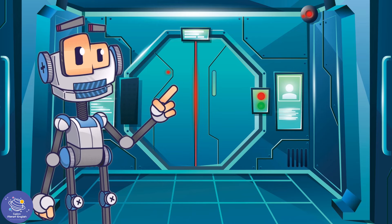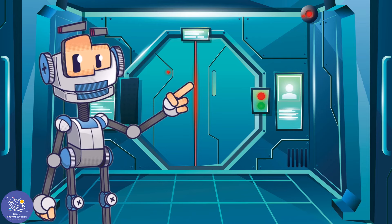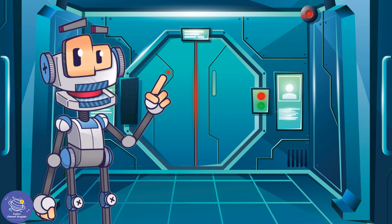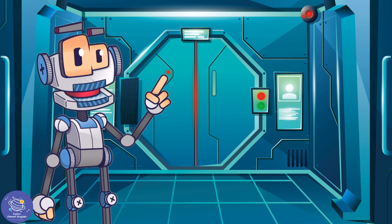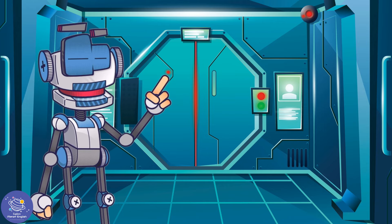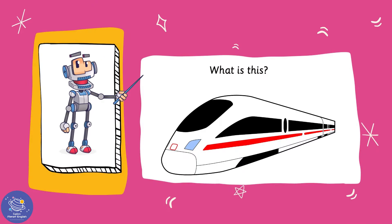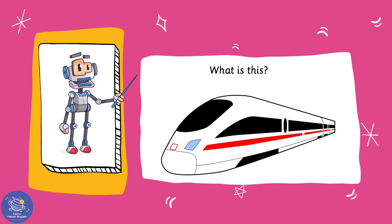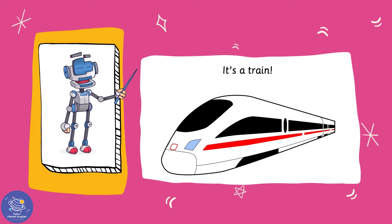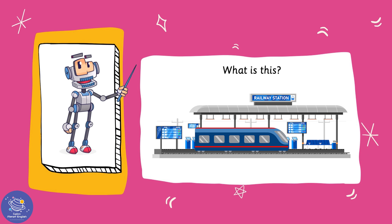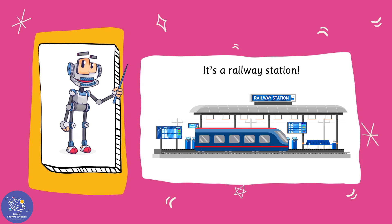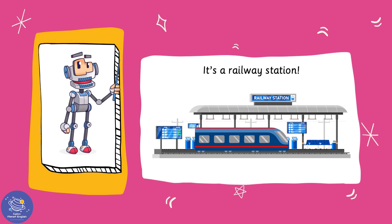Hi everyone, welcome to another language lesson with me, Lingo the language bot! What are we going to learn about today? Let's find out. What is this? It's a train! Well done. What is this? It's a railway station. Well done, it's a railway station.